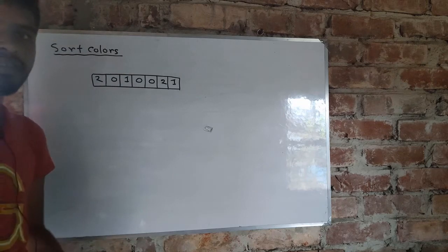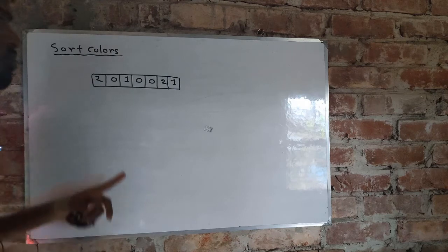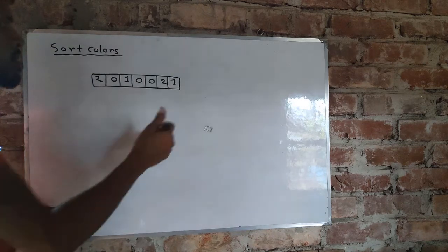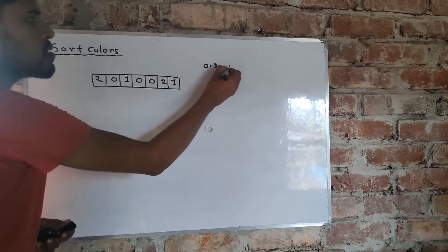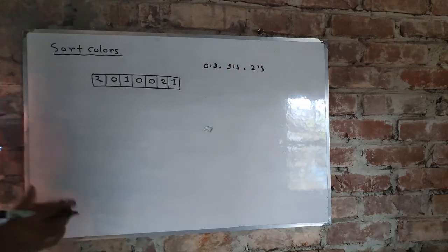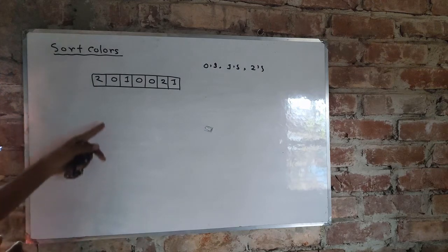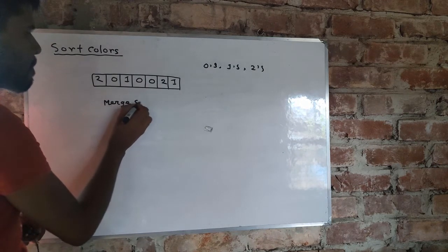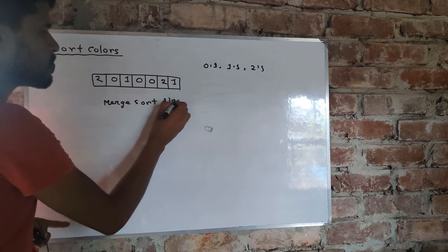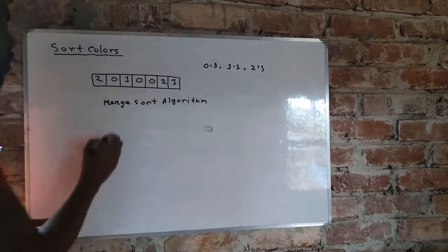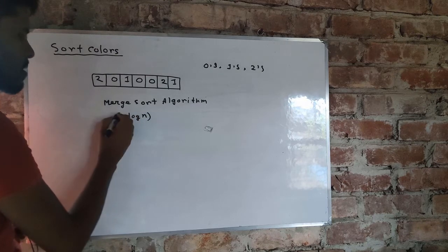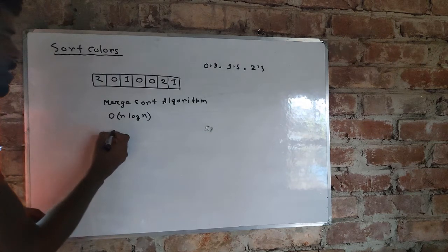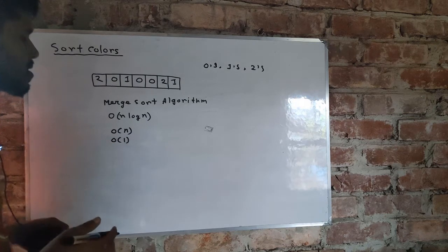Welcome back. In this video we're going to solve a classical coding interview question: Sort Colors. In this problem you are given an array of integers containing zeros, ones, and twos, and we have to sort this array in ascending order. You could solve this using Merge Sort, but Merge Sort takes O(n log n) time complexity, which is not an efficient solution. We have to solve this in linear time complexity and constant space complexity.